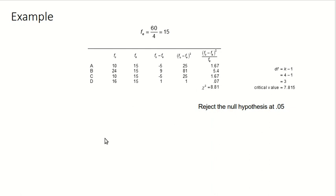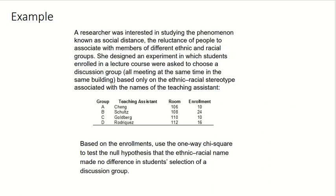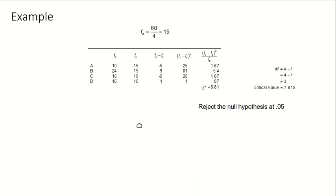What that means is that students did tend to self-select into groups based on their preconceived notions. At least we have evidence that's the case. Looking at the frequency distribution, we can see that most prefer the name Schultz, and people avoided the Chang and Goldberg courses more than they avoided the Rodriguez course. Those differences are statistically significant, meaning we can generalize to the broader population from the sample.